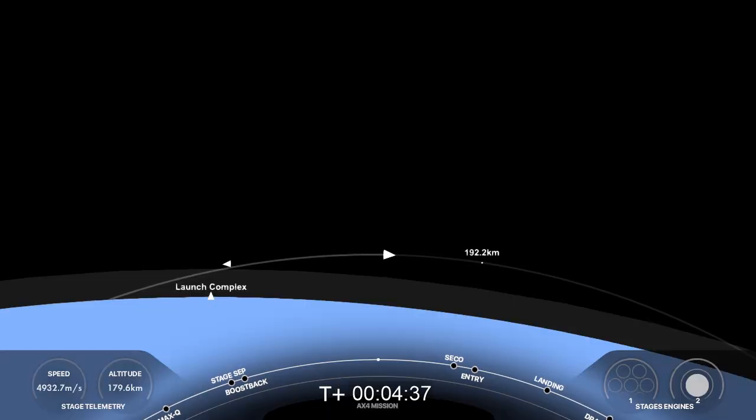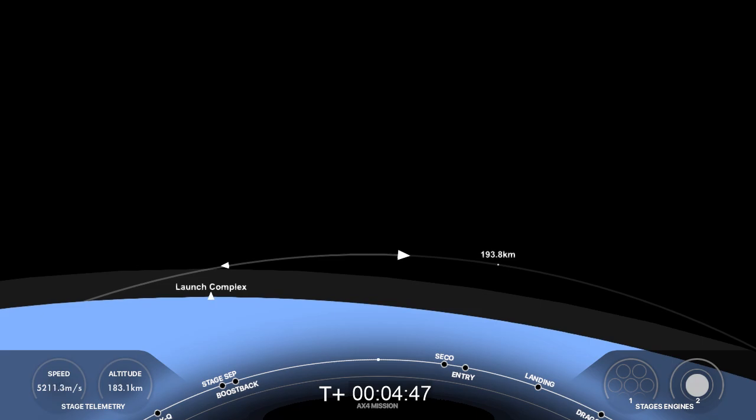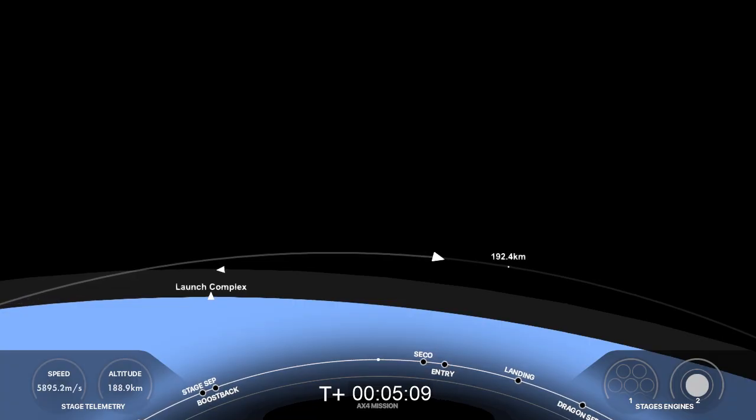Now our next major event coming up will be in about a minute and ten seconds. That's going to be the entry burn. That's where we're going to light a single center engine on the first stage. That's going to slow us down in preparation for entering the Earth's atmosphere again. We'll then have a landing burn about a minute later at T plus seven minutes and 19 seconds. Now for that one we actually light three engines again, then quickly, once we've kind of jammed the brakes on, we'll turn off two of the engines. We'll be down to just a single engine.